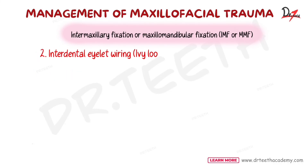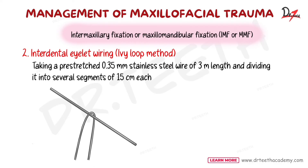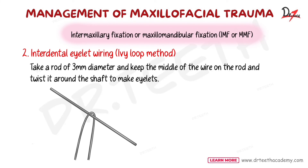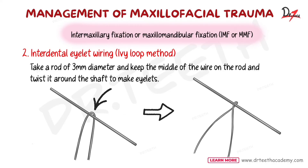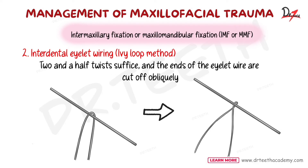The interdental eyelet wiring, or IV loop method, involves taking a pre-stretched 0.35 mm stainless steel wire of 30 cm length and dividing it into segments of 15 cm each. A rod of 3 mm diameter is used — the middle of the wire is placed on the rod and twisted around the shaft to make an eyelet. Two and a half twists are sufficient, and the ends of the eyelet wire are cut off obliquely.